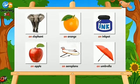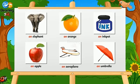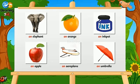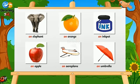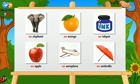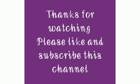The words are elephant, orange, inkpot, apple, aeroplane, umbrella. These are also names of things, also in the singular number, but all of them begin with a vowel sound. We have used AN before all of them.